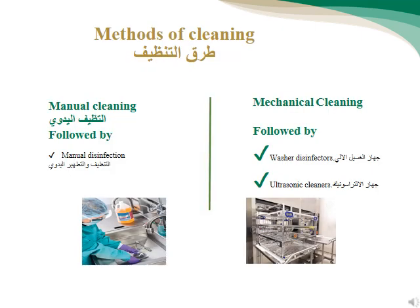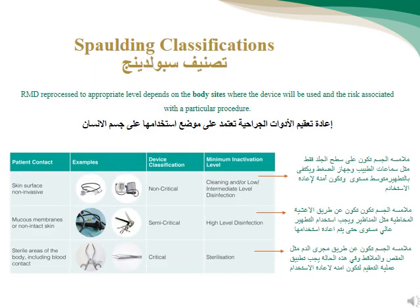Methods of cleaning: Manual cleaning followed by manual disinfection, or mechanical cleaning followed by washer disinfector or ultrasonic cleaner. Spaulding Classification — reusable medical devices are reprocessed to an appropriate level depending on the body site and risk of the procedure. If the device contacts the patient's skin only, it is considered non-critical, and low-to-intermediate level disinfectants are sufficient after cleaning.